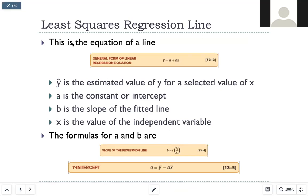To solve for this, this is the equation that we'll use. It's y hat equals a plus bx. Y is our estimated value of y for a selected value of x. A is a constant or an intercept, and b is the slope of the fitted line, and then x is the value that will input into the equation.